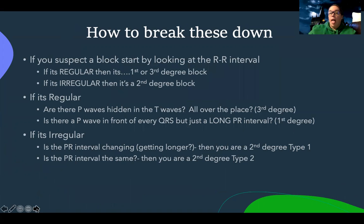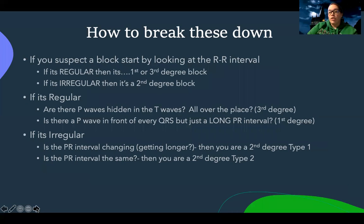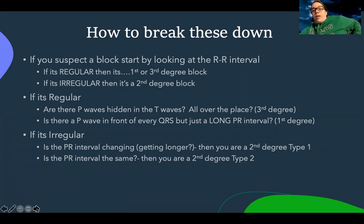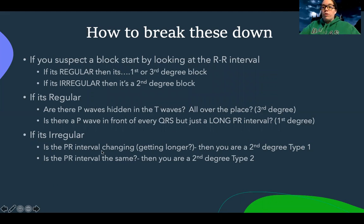So here's how to break these down. If you suspect a block, start by looking at the R-to-R interval. If it's regular — same distance between your QRS complexes — it has to be a first or a third degree block. If it's irregular, then it's a second degree block. If it's regular, look at the P waves: if there are P waves hidden in the T waves or P waves all over the place, that's a third degree. If there are P waves in front of every QRS but just a long interval, that's first degree. Then differentiate the two second degrees by the PR interval: longer-longer-drop is type one; normal PR with randomly dropping beats is type two.